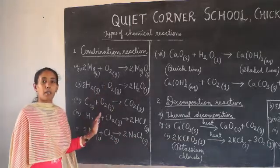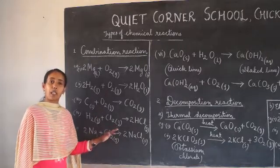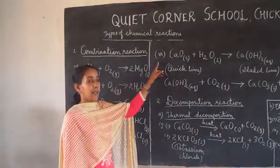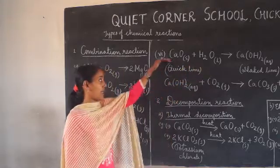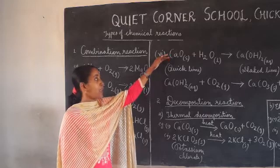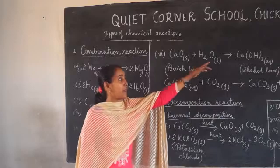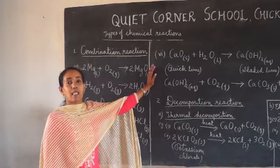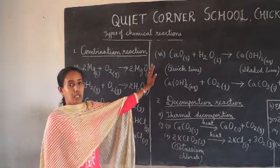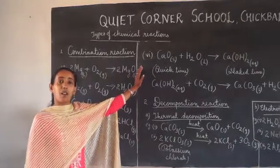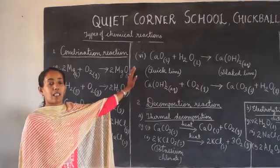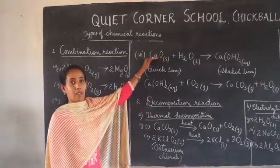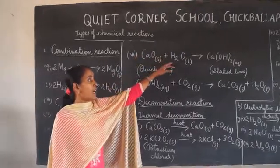So, combination reactions are reactions in which two or more elements or compounds combine together to form a single product. Similarly, calcium oxide combines with water to form calcium hydroxide. This reaction is very useful — it is the reaction taking place in whitewashing. What do we mean by whitewashing? It is the coating applied on cement walls to give a shiny white-colored surface. The compound used in whitewashing is calcium oxide, which we dissolve in water.